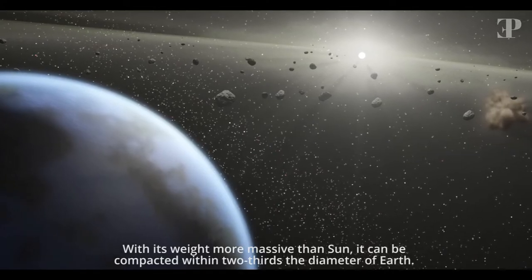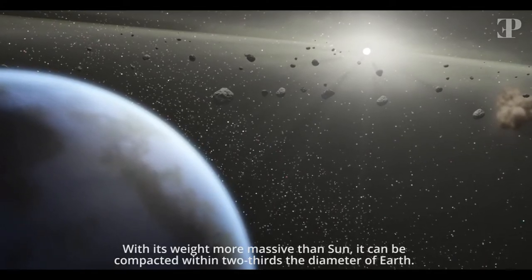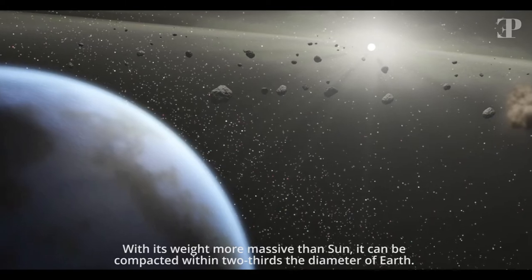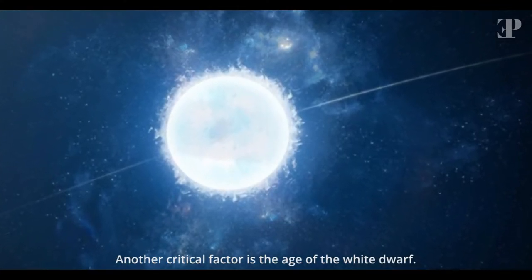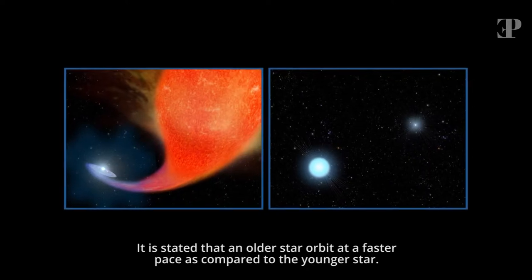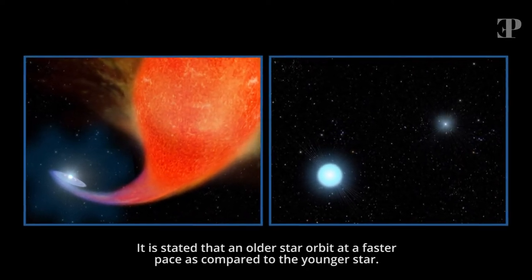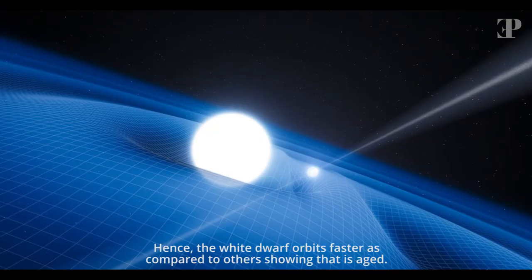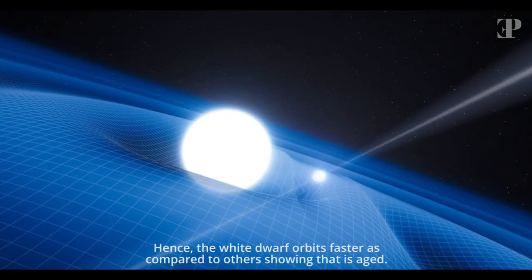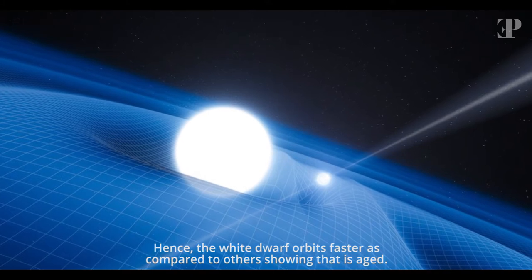With its weight more massive than the Sun, it can be compacted within two-thirds the diameter of Earth. Another critical factor is the age of the white dwarf. It is stated that an older star orbits at a faster pace as compared to the younger star. Hence, the white dwarf orbits faster as compared to others, showing that is aged.